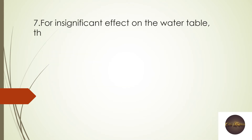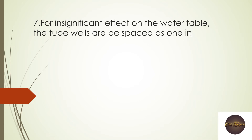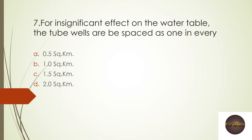Next question: For an insignificant effect on the water table, tube wells should be spaced — options: 0.5 sq km, 1 sq km, 1.5 sq km, 2 sq km. For negligible effect on the water table, we need to place two wells within 1.5 square kilometers so that we can judge the level of the water table.